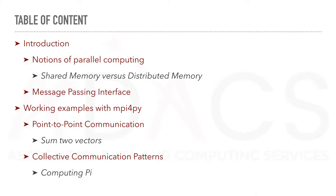The tutorial is structured as follows. First, we will begin with an introduction to background notions of parallel computing. In particular, we will look at the difference between shared memory and distributed memory. Then we will introduce MPI, the message passing interface. From there, we will cover a number of concepts using working examples — in particular, how to send and receive messages with two types of communication: point-to-point communication and collective communication.